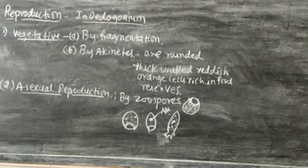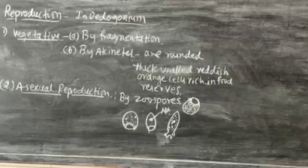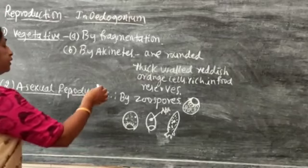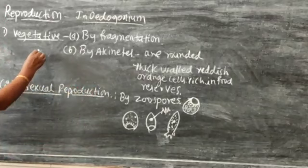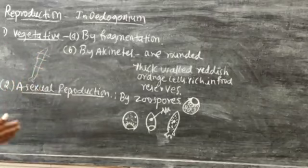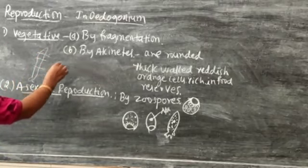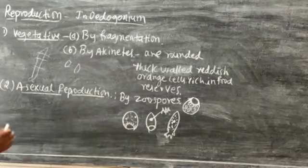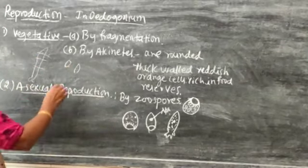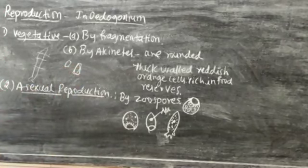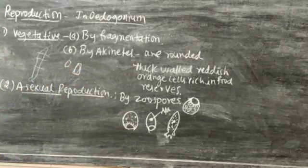Vegetative reproduction takes place by means of fragmentation. Fragmentation means when the filament is cut into fragments. The Oedogonium filament, when it is cut by means of accidental breakages, cuts into several parts, each part of which is called a fragment. This fragment develops into a new independent Oedogonium.